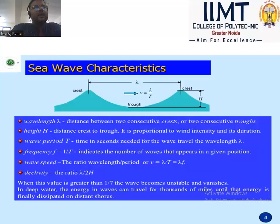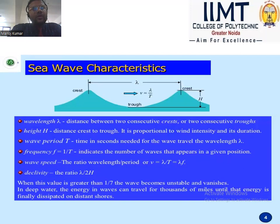This is ocean energy. Sea wave characteristics: ocean wave energy is defined as a wave of kinetic energy produced, then converted into an electric generator via a shaft. Water waves move and generate kinetic energy, and a shaft connected to a generator rotates and produces electricity.